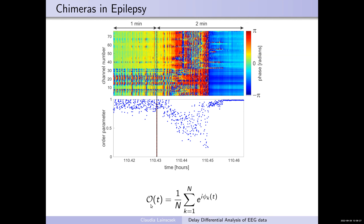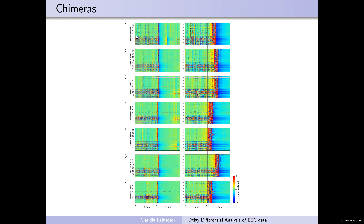I computed the Kuramoto order parameter by looking at the phase distribution. Before the seizure I see the typical chimera state, then things get more chaotic, and then they synchronize again after. Looking at seven seizures over 30 minutes before and after — and five seizures over five minutes before and after — these seizures look very alike. I aligned them to the onset as determined by the neurologist, though some are slightly delayed, which I'm still discussing with MGH.